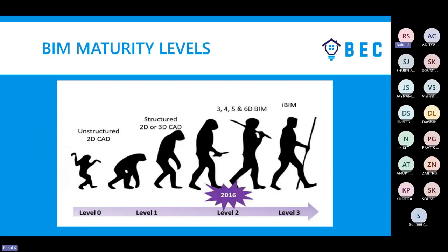To understand BIM, you need to be clear on three separate parameters: first, BIM dimensions; second, BIM maturity levels; and third, LOD — which stands for Level of Development or Level of Detail. Each of these is a distinct concept, so now let's look at what BIM maturity levels actually are.